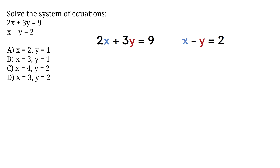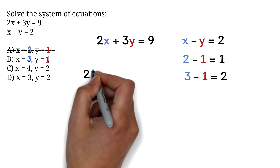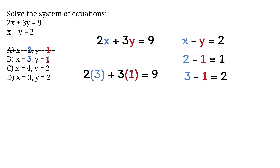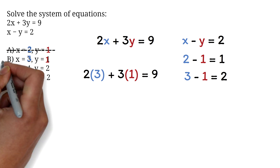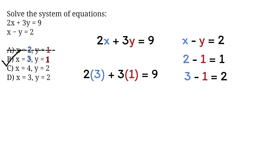If I pick option A — x equals 2, y equals 1 — and place it in the second equation: 2 minus 1 is not 2, so option A is wrong. For option B, x equals 3 and y equals 1: 3 minus 1 is 2, so this satisfies the second equation. We then check the first: 2 times 3 plus 3 times 1 equals 9, which also satisfies it. The correct answer is therefore option B, since it satisfies both equations.